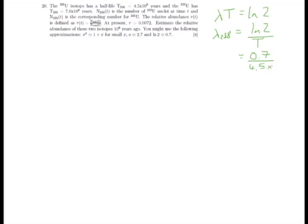To start with, we need to use the equation λT = log 2, where T is our half-life and λ is the decay constant for that particular isotope. So λ₂₃₈ is going to be equal to log 2 divided by T. The question asks us to approximate log 2 as 0.7, so that's 0.7 divided by 4.5×10⁹, which gives us 7 divided by 45, times 10 to the power of minus 9.